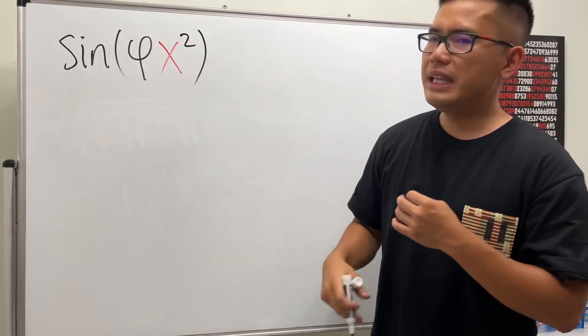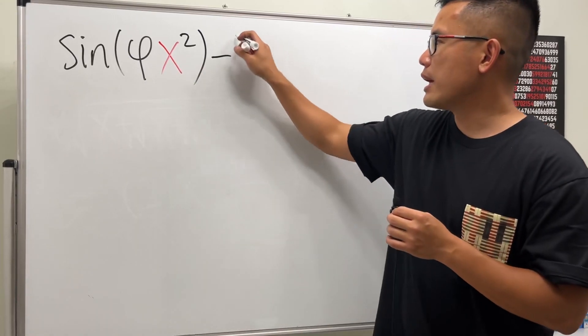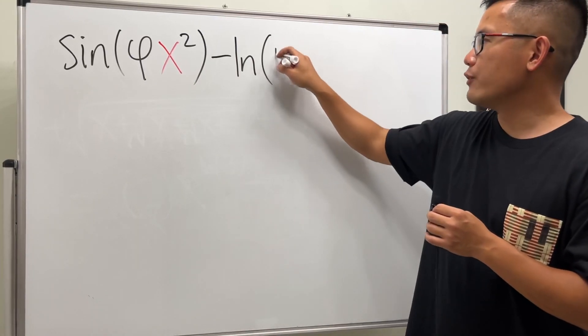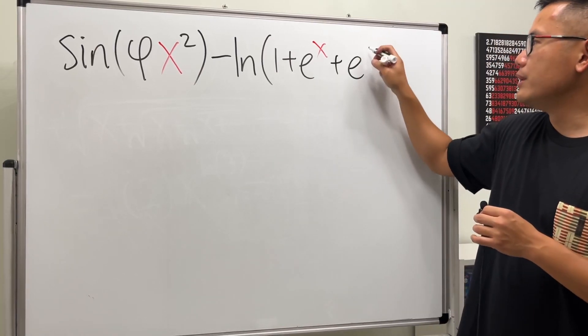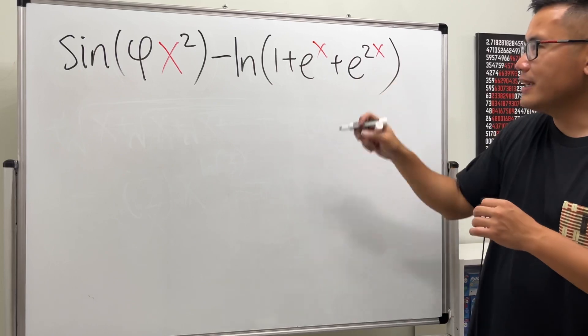Let's put x to the second power, and then we'll continue. Let's go ahead and subtract ln, and then we have 1 plus e to the x, and then more of course, let's add e to the 2x.